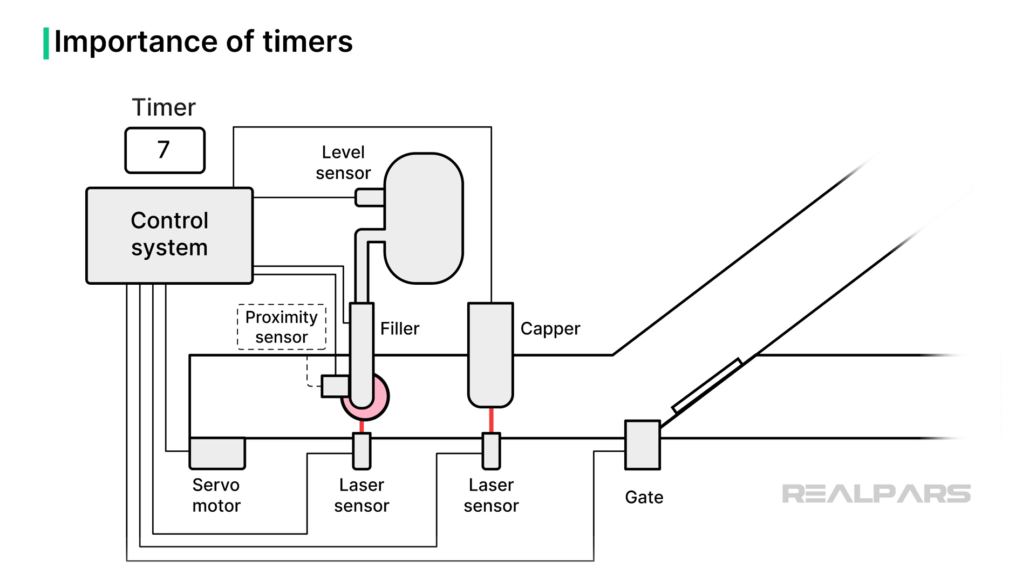In complex systems with multiple actuators, sensors, and processes, timing functions help synchronize the actions of different components. For example, in a conveyor belt system, timing functions can ensure that items are moved at the right speed, and that loading and unloading occur at the appropriate times.